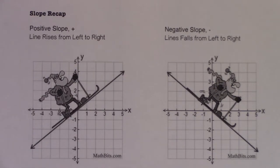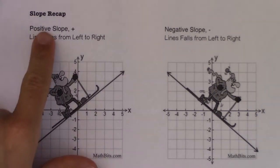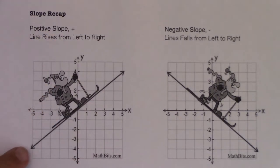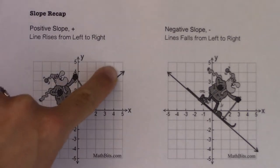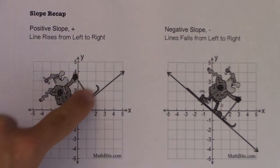Hey Math 31, just a quick slope recap. So if you have a positive slope, your line is going to rise as you move left to right. Okay, your line is increasing.